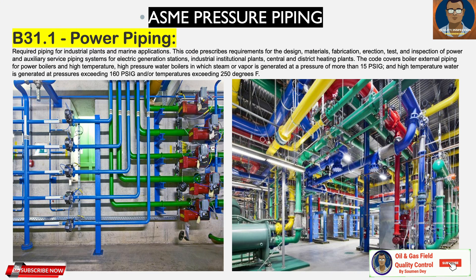B31.1 is for Power Piping — required piping for industrial plants and marine applications. This code prescribes requirements for the design, material, fabrication, erection, test, and inspection of power and auxiliary service piping systems for electric generation stations, industrial and institutional plants, and central and district heating plants. The code covers boiler external piping for power boilers and high temperature, high pressure water boilers in which steam or vapor is generated at a pressure of more than 15 psi, and high temperature water is generated at pressures exceeding 160 psi and/or temperatures exceeding 250 degrees Fahrenheit.